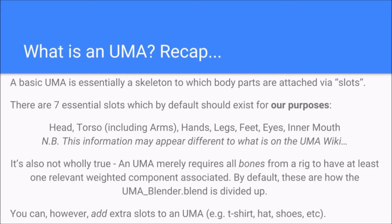We won't be dealing with the eyes and inner mouth for various reasons. For those of you that are UMA experts, you may know this is not wholly true — Anuma just requires all the bones from the original default rigs to have at least one relevant weighted component associated. So for those of you skilled in Blender, you'll probably see that and already know what you're doing. But for those of you that don't, keep an eye on that, because this is how it's divided up in our UMA underscore Blender dot blend file.